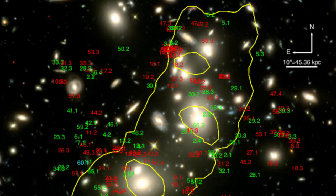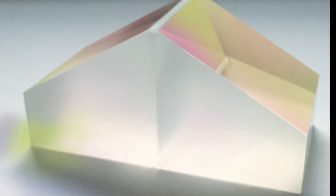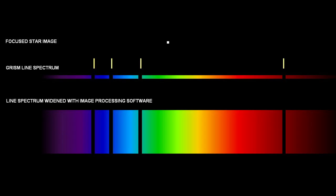GLASS stands for GRISM Lens Amplified Survey from Space. GRISM, a frankly horrific word that sounds like it should be an obscenity even if it isn't, is short for grating prism, a tool used by spectroscopists to analyze the composition of starlight.